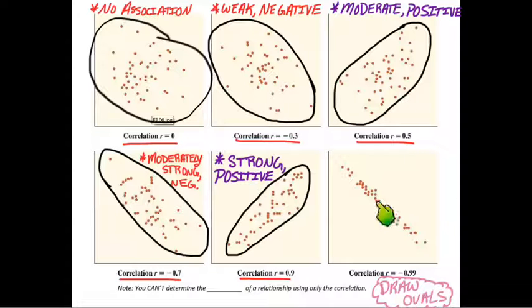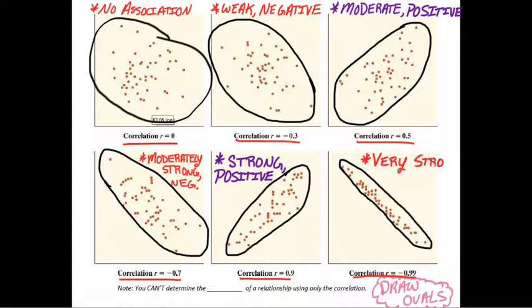And the last one here, bottom right corner, that's almost perfect. That's r equals negative 0.99. Almost perfectly linear, and it's negative. So you could call that maybe a very strong negative.